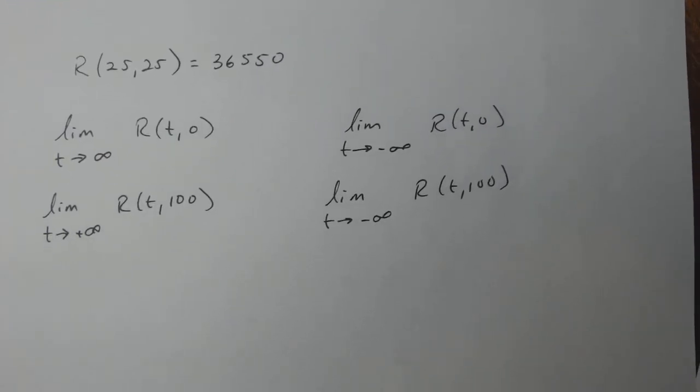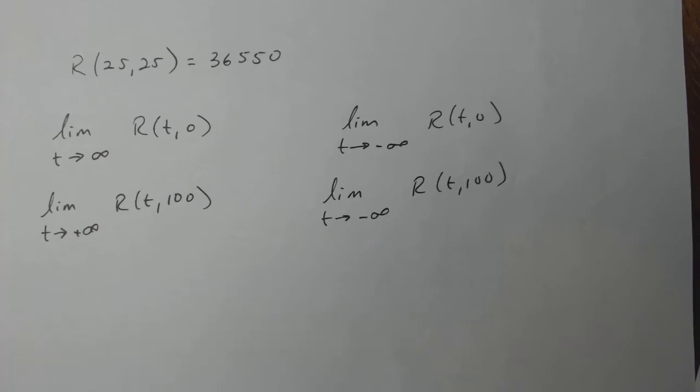Now we're going to do these other ones as well. This is just finding the limit of a function where one variable is fixed. So these are all functions of one variable, not two, because I fixed the other one.